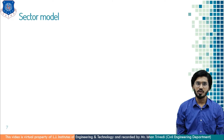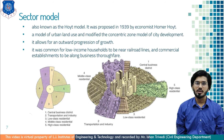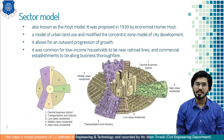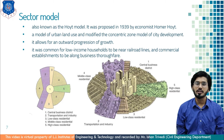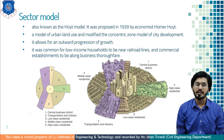The second model is the Sector Model, also known as the Hoyt Model. It was proposed in 1939 by economist Homer Hoyt. It is a model of urban land use that modified the Concentric Zone Model of city development — you can say it is a modified version of that model. In developing this model, Hoyt observed that it was common for low income households to be nearer to the railroad lines and commercial establishments to be along the business thoroughfare.